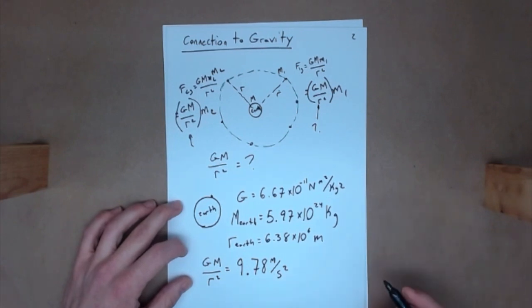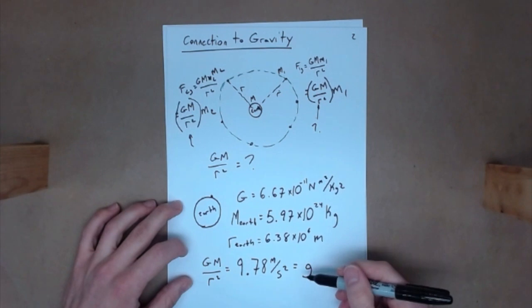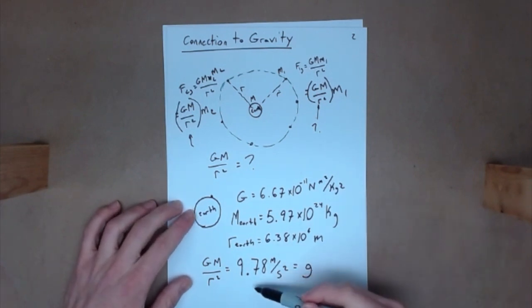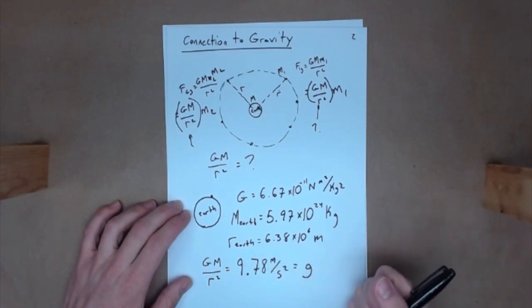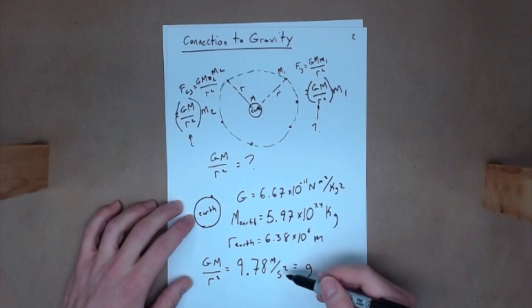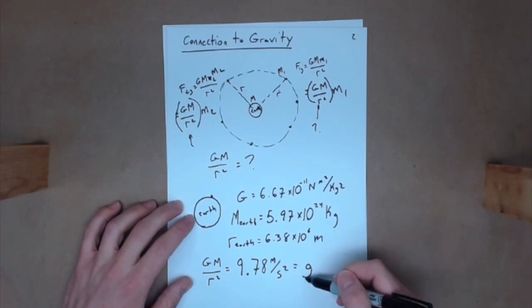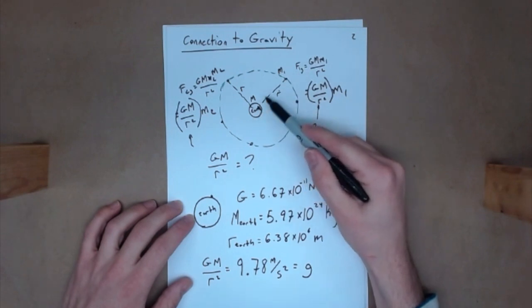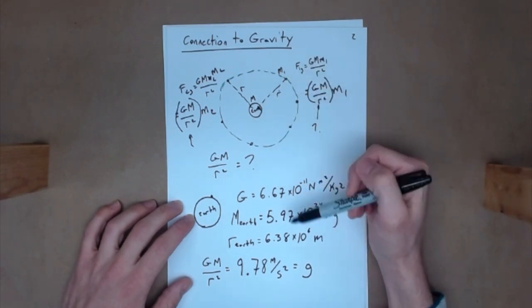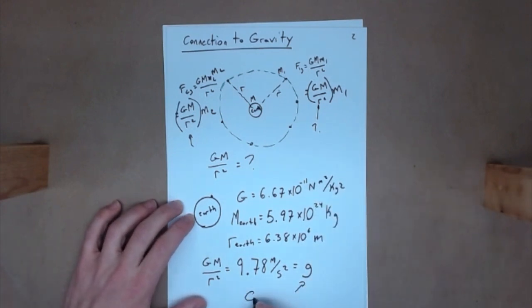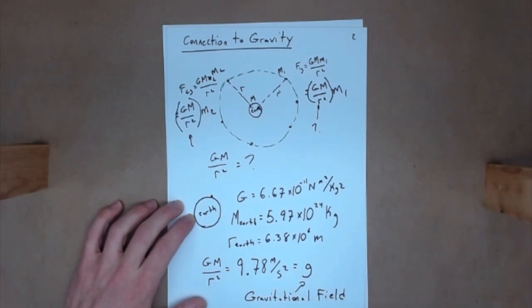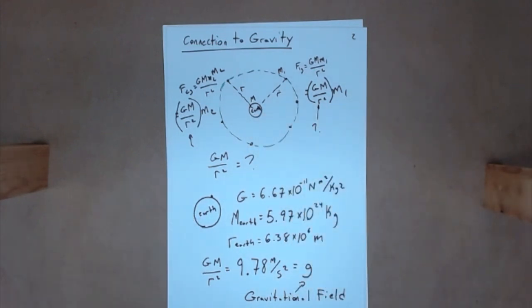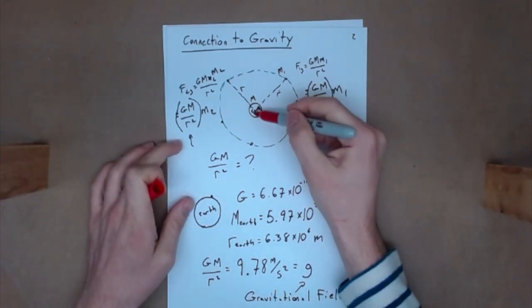This number should look very familiar — this is lowercase g, the acceleration due to gravity on the surface of the Earth. It's a little off from the 9.81 we usually use, but close enough. This tells us that g is connected to the distance you are from the Earth. The further away you go, the smaller g becomes. This g is what we call the gravitational field — it's the field generated by the Earth at distances away from the source of mass.